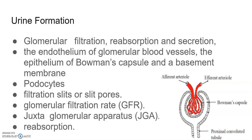Nephrons are of two types: cortical nephrons and juxtamedullary nephrons. The efferent arteriole emerging from the glomerulus forms a capillary network around the renal tubule called peritubular capillaries. Minute vessels of this network run parallel to the loop of Henle forming a U-shaped structure called vasa recta, which is absent or highly reduced in cortical nephrons.